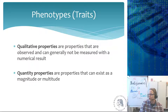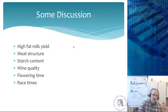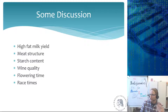Something like height is by definition a quantitative phenotype because it has quantity properties — you can measure it in meters or centimeters and use that numerical value to compare individuals. Now let's go through some examples: is high fat milk yield quantitative or qualitative? Just throw it in the chat.